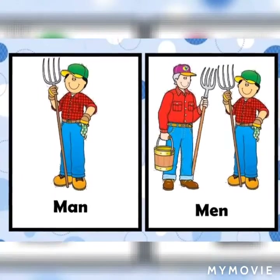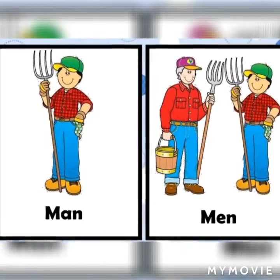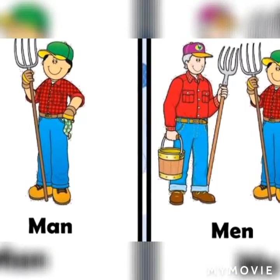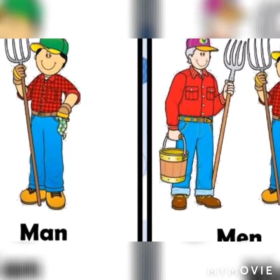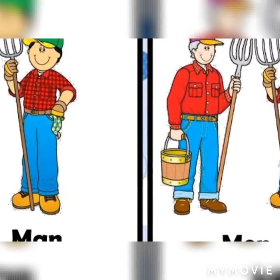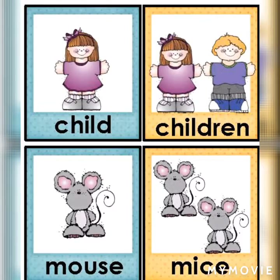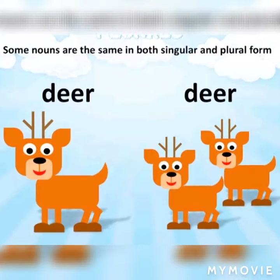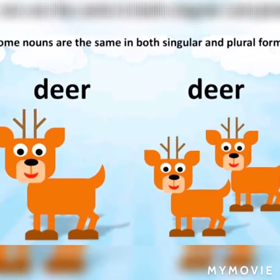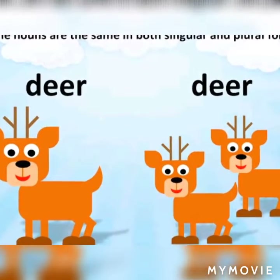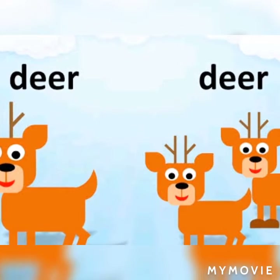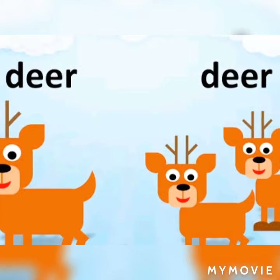Some words modify their spelling while changing from singular to plural. For example, m-a-n, man — m-e-n, men. Some words remain exactly the same while changing from singular to plural. For example, d-e-e-r, deer — d-e-e-r, deer.